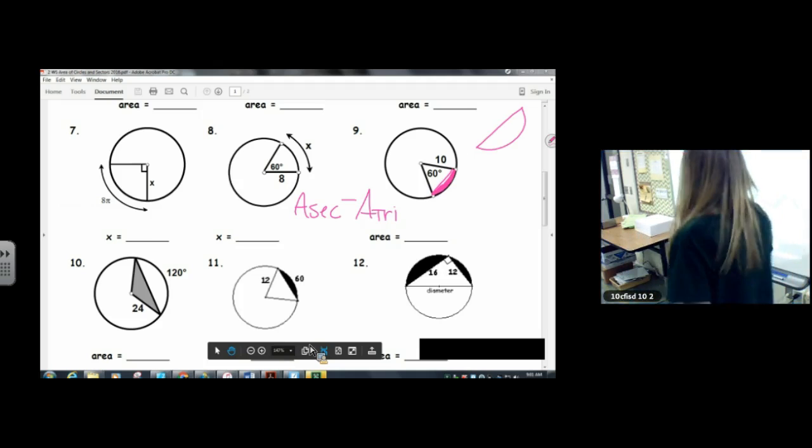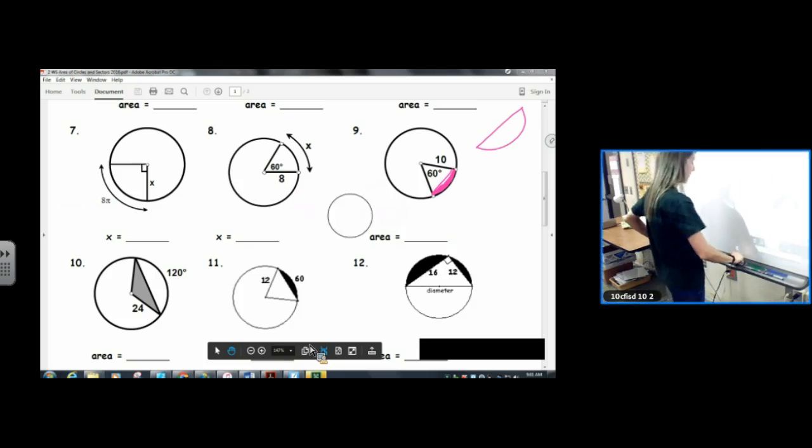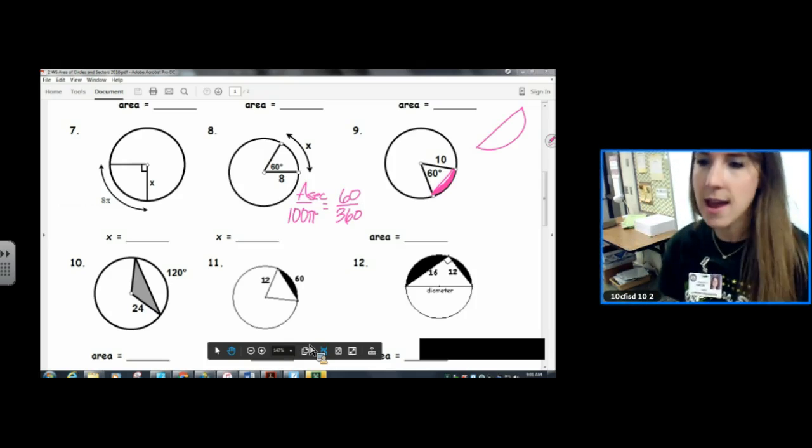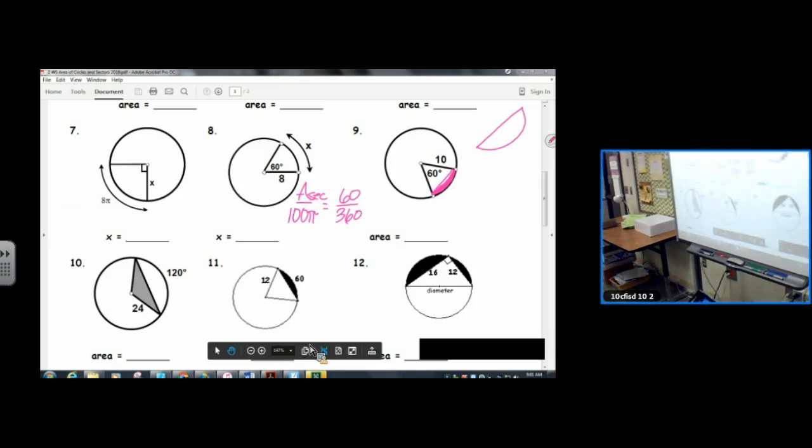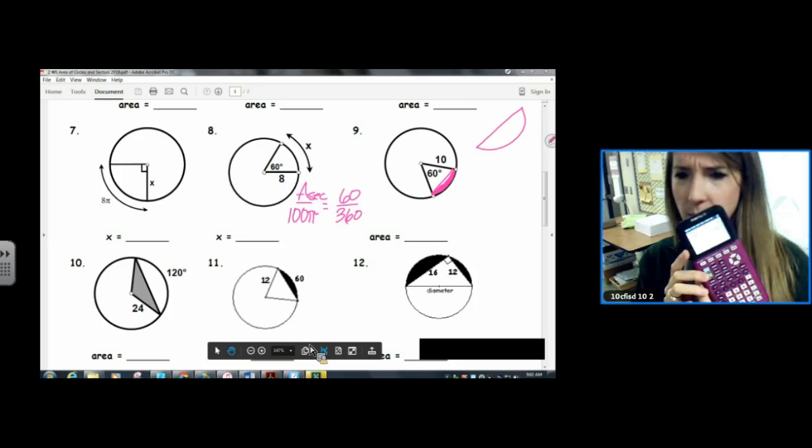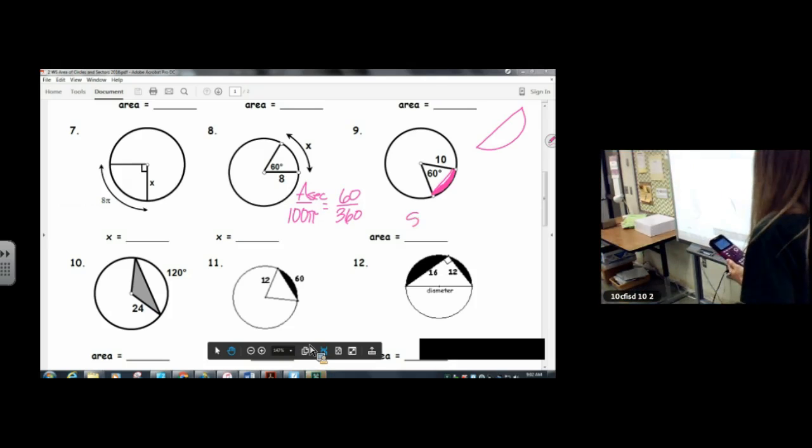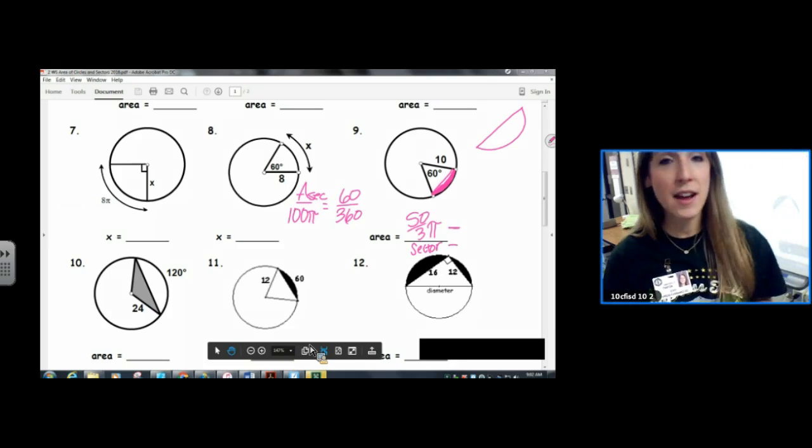Let's find the area of the sector. A sec over A equals M over 360. A sec over A equals M over 360. 100 times 60 divided by 360. Ooh, ugly decimal. What do we do? Math, enter, enter. So the area of the sector is fifty-thirds pi. We're not done. It wasn't asking for the area of the piece of pi—it wants us to take away the triangle.